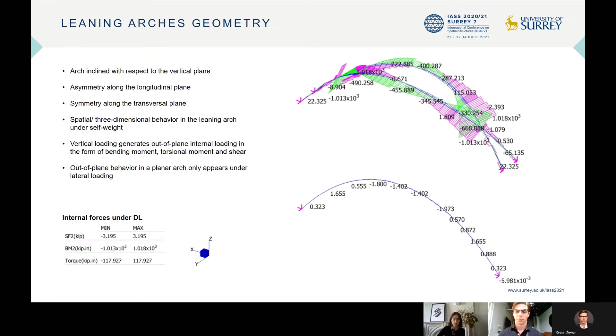So, by leaning arches, we define a leaning arch by an arch that's inclined with respect to the vertical plane, resulting in asymmetry along the longitudinal plane, while maintaining symmetry along the transversal plane. And this asymmetrical configuration resulting in a three-dimensional behavior load applied vertically to a leaning arch generates out-of-plane internal loads, while this out-of-plane behavior would only occur on the lateral loading in the case of a planar arch.